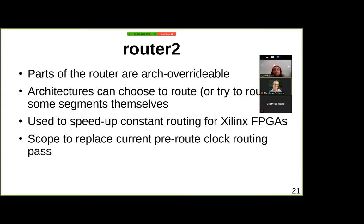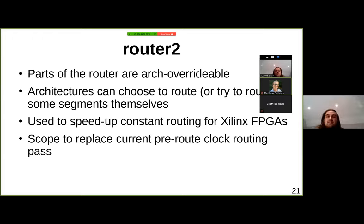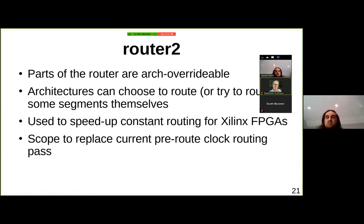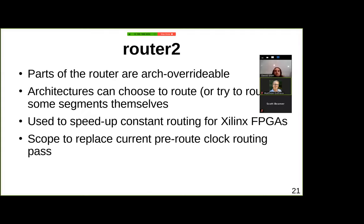A big thing in Router 2 is making it possible for the architecture to override parts of the router, because working on Xilinx support I found you need special cases that are very hard to genericize. The key concept is splitting routing of a net into segments, where the architecture can route those segments itself. For example, on a Xilinx FPGA there are special resources for constant wires — connections to zero or one — so it's wasteful to use a general router for those specialized connections.